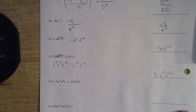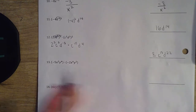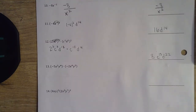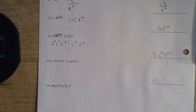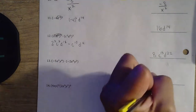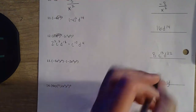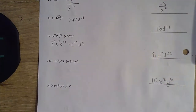Question number 13. We don't need parentheses around these, so we just multiply the numbers — negative 5 times negative 2 is positive 10. Then we put our bases x and y and figure out what our exponents are going to be. 2 plus 6 gives us x to the 8th power. 4 plus 2 gives us 6. Final answer: 10x to the 8th, y to the 6th.